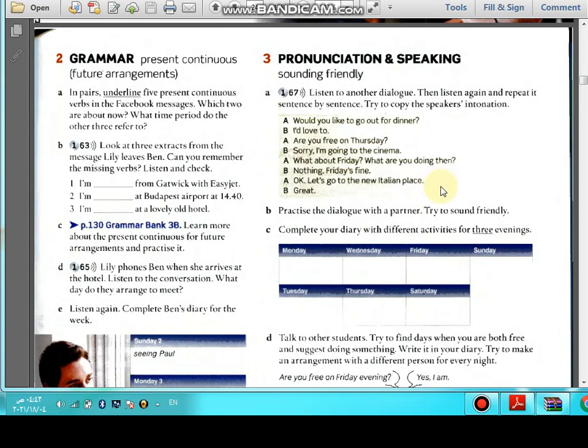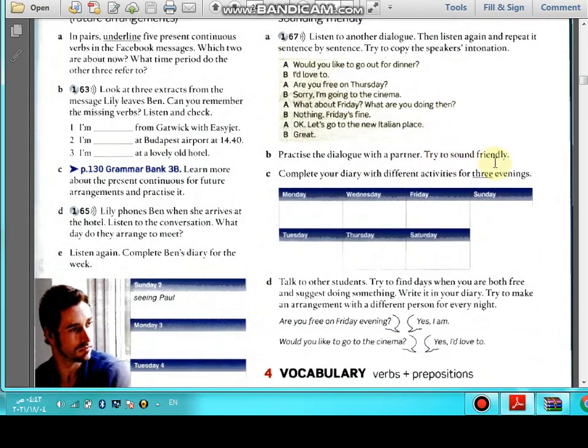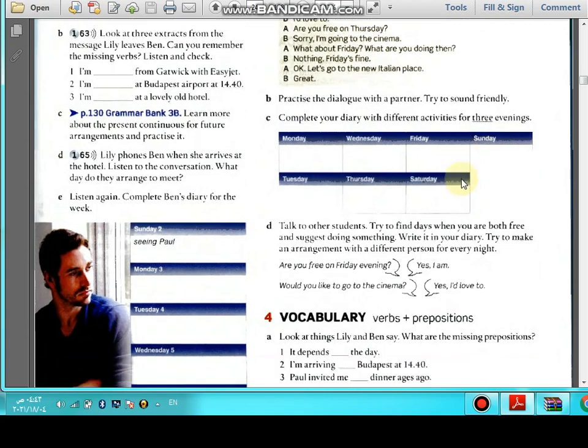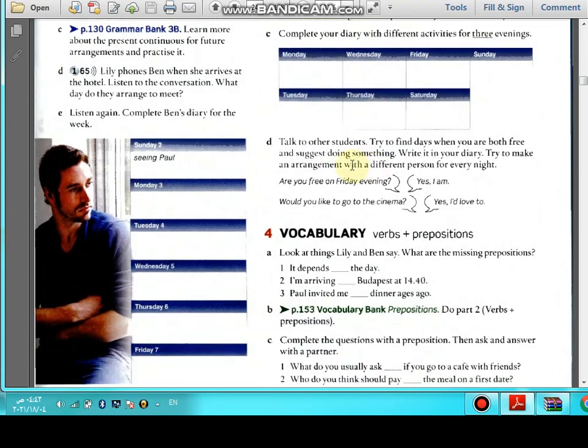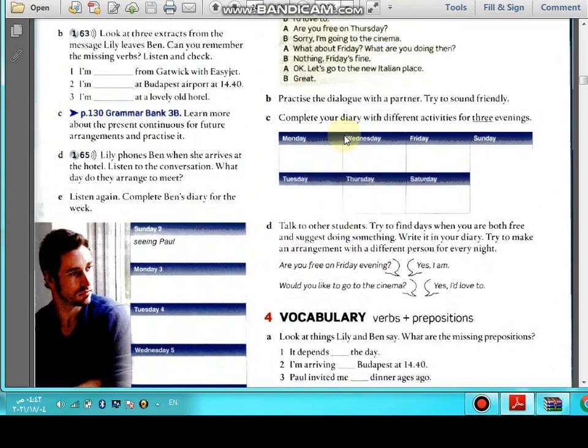Okay, practice the dialogue with a partner. We don't need to practice again. Complete your diary with different activities for the evening. So this is like a homework. You will do it on Monday evening or Wednesday or Sunday. We have different activities for three evenings. You will choose three days and put the activities that you practice them in these days, like what we said about Paul, but here we will talk about you.